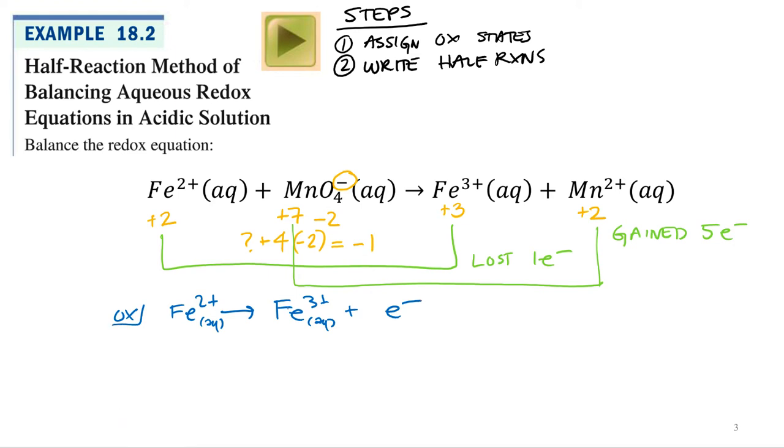And then manganese went from plus 7 to plus 5. It gained 5 electrons. What happened to it? It was reduced. Reduction. So MnO4- gained 5 electrons to produce Mn 2+.